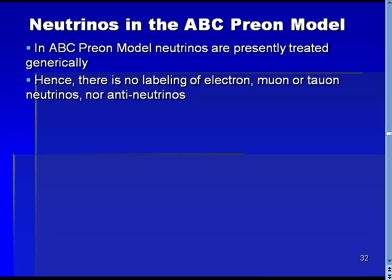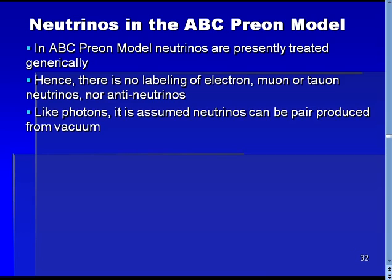Similarly, antineutrinos are not tagged as being different from regular neutrinos in the slides shown here. Like photons, it is assumed that neutrinos can be pair-produced in vacuum.